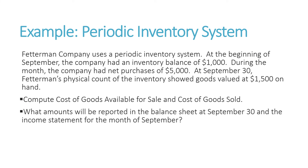So we have an example. Fetterman Company uses a periodic inventory system. At the beginning of September, the company had an inventory balance of $1,000 — that's our beginning inventory. During the month, the company had net purchases of $5,000. And then at the end of September, which is our accounting period, they do a physical count of the inventory, and it shows that goods valued at $1,500 are on hand. Pause the video and compute cost of goods available for sale and cost of goods sold, and then think about what amounts will be reported on the September 30 balance sheet and income statement.